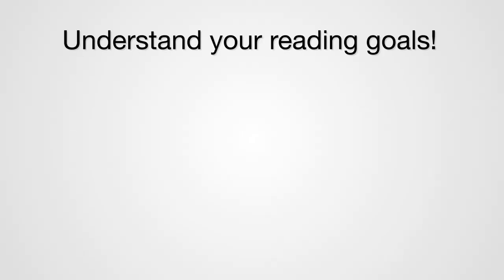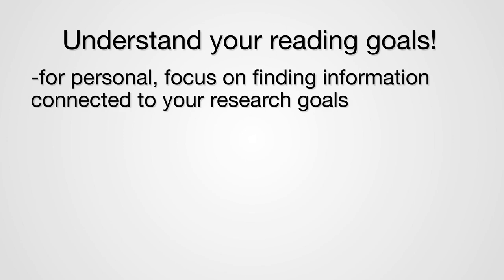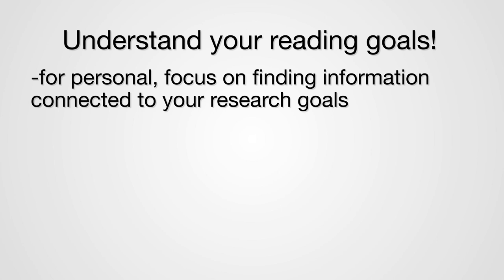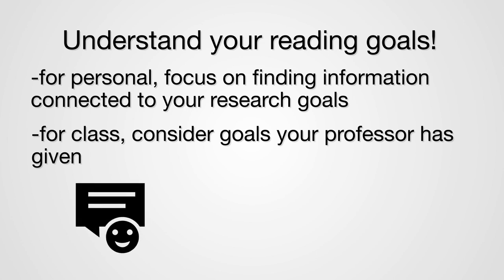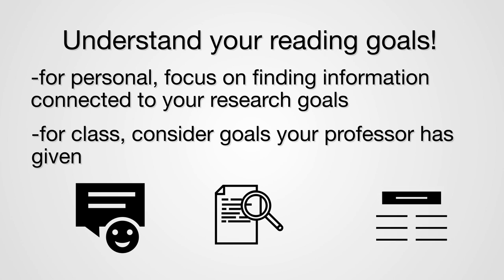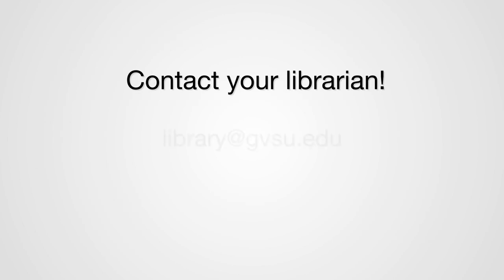Understand your reading goals. If you're reading for your own personal work, then focus on finding information connected to your research goals. If you're working on a class assignment, consider the goals your professor might have for you. They might want you to concentrate on creating a series of responses to questions, or perhaps locate the main idea and/or findings. If you are given an assignment sheet with listed objectives, you might want to look over your completed annotation and check off each objective when finished. This will ensure that you've met all of the requirements. And remember, if you need information assistance, contact your librarian.